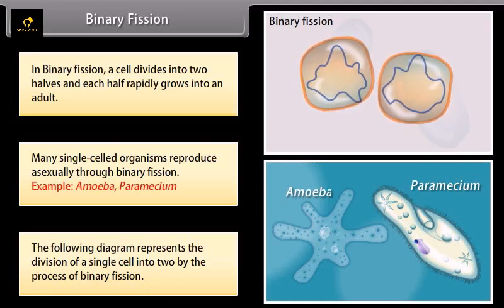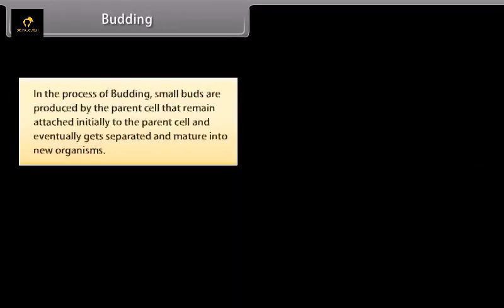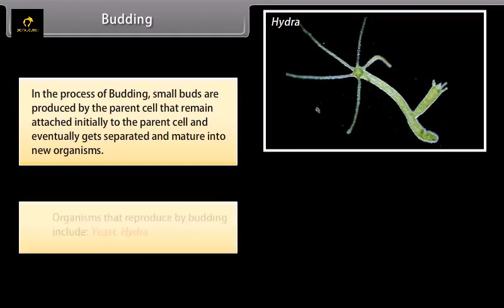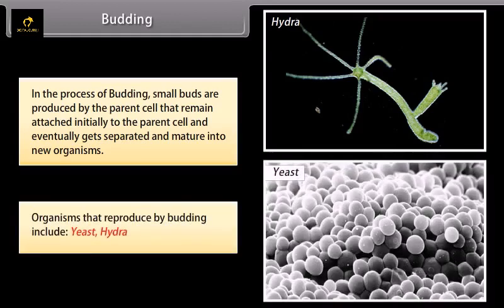In the process of budding, small buds are produced by the parent cell that remain attached initially to the parent cell and eventually get separated and mature into new organisms. Organisms that reproduce by budding include Hydra.